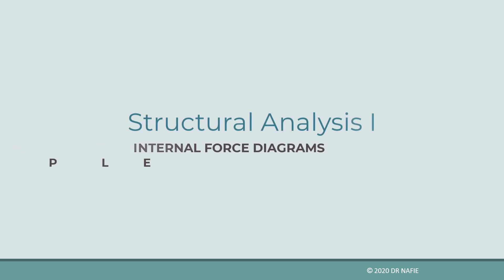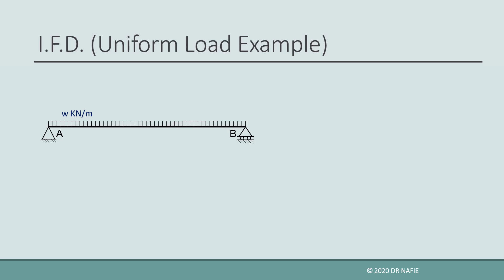Today we will show how to find the internal force diagrams for a beam carrying a uniform load. The main effect of the uniform load appears in the bending moment diagram. If a beam is loaded with a uniform load and we calculate the internal moments at two points on the beam, we cannot obtain the diagram by just connecting the two values using a straight line.